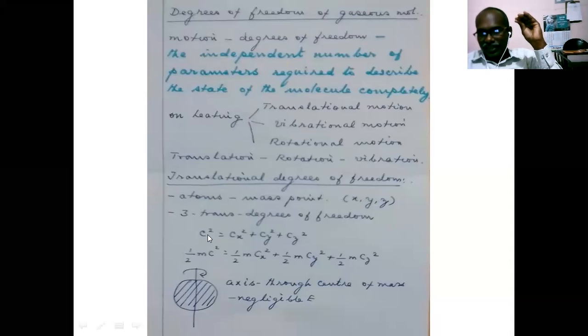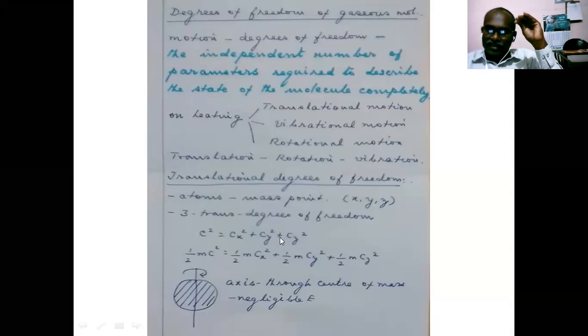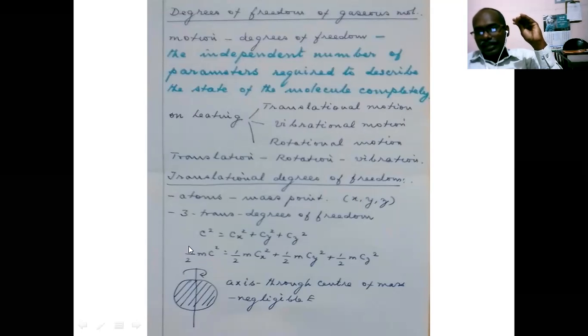If the velocity is c, then c² = cx² + cy² + cz². The kinetic energy of the molecule is equal to the sum of kinetic energy along the x direction, kinetic energy along the y direction, and kinetic energy along the z direction.